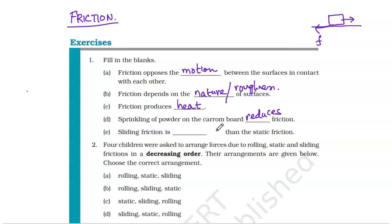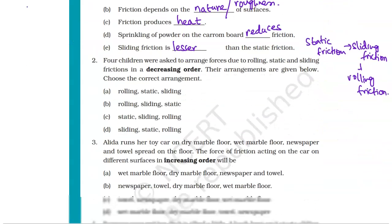Sliding friction is less than static friction. The order is: first maximum is static friction, then we have sliding friction, and then minimum is rolling friction. This is the order. Please remember this, and if you want to know how and why, see my lecture - it's given.